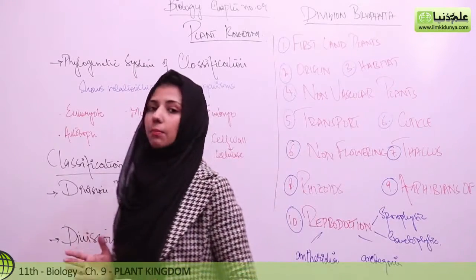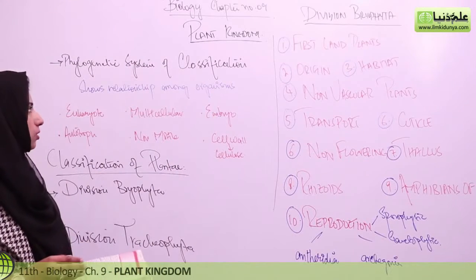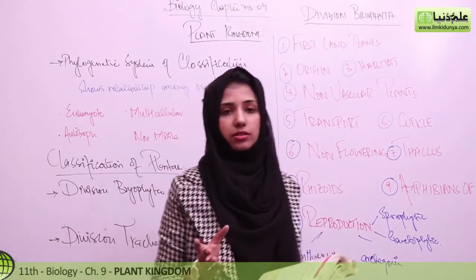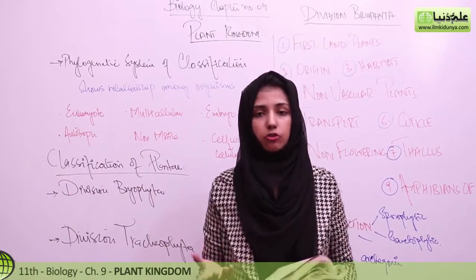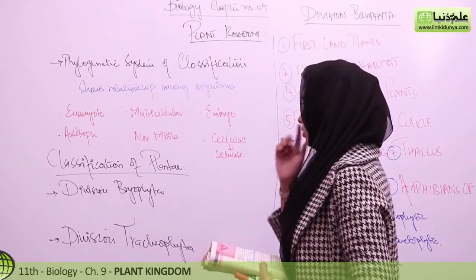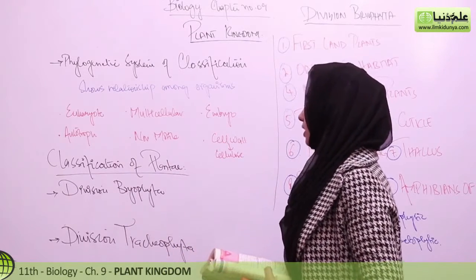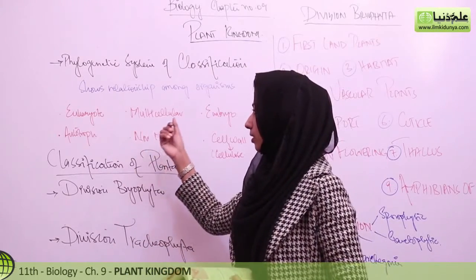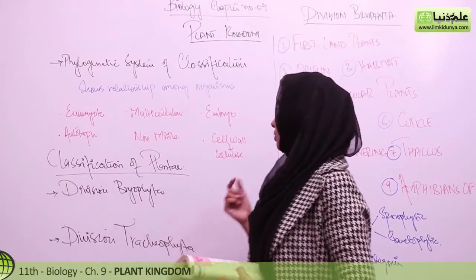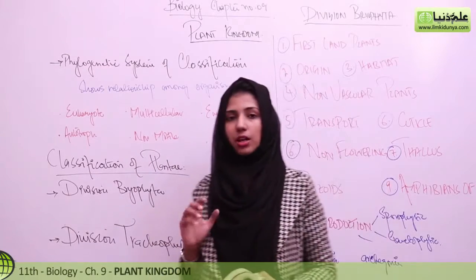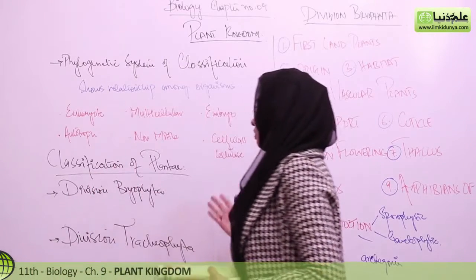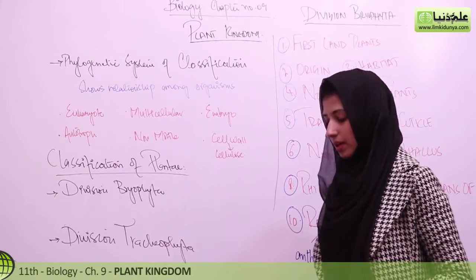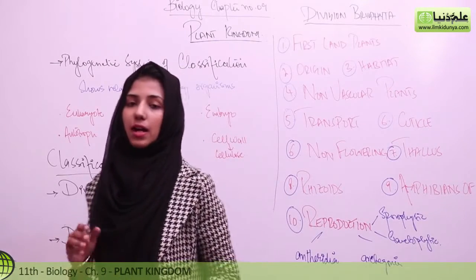Phylogenetic means that the genetic makeup is the same, and in addition to that, their relationship is the same — that is about the mode of nutrition, mode of food. And in addition to that, their motility, that they are non-motile. Then there are the overall common characters: eukaryotic organisms, they are multicellular, embryo formation, that is blastular formation. In addition to that, there is autotrophic nature, non-motile, and cell wall which is made up of cellulose. So these are the basic 6 parameters which we have used to classify these organisms in the plant kingdom.